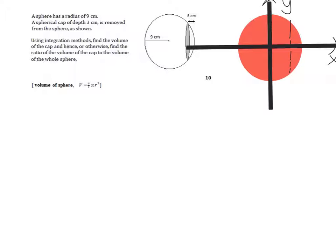So I've placed the circle onto the axis. I'm told that the radius is 9, so this point here is going to be 9. I'm going to have the centre of the circle at the origin and this side is going to be minus 9. The part that's been removed has a depth of 3, so this point here is going to be 6 because I've got 6 still there and 3 has been removed.